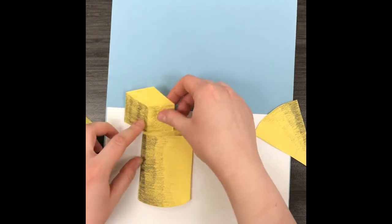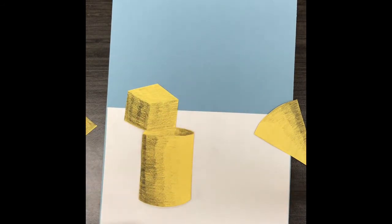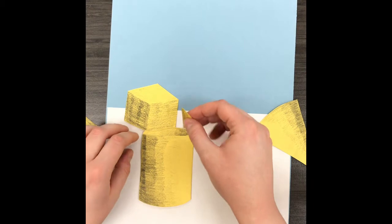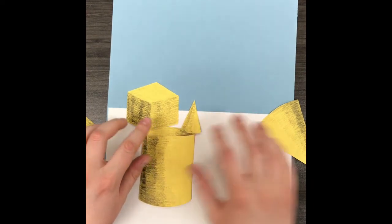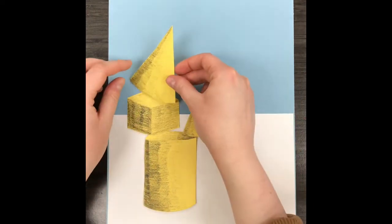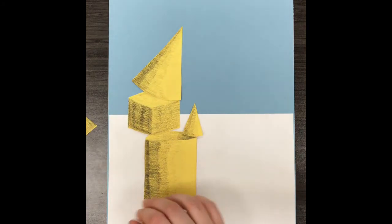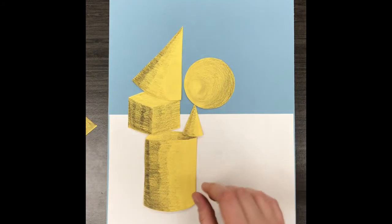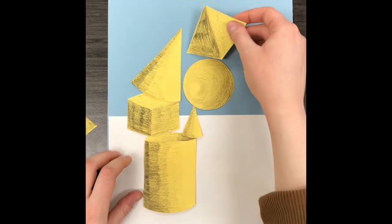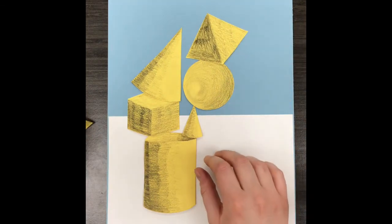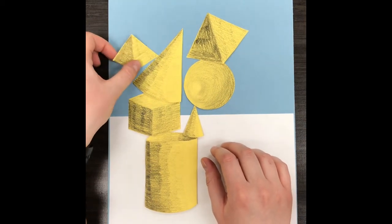So right now I'm going to do my cylinder at the bottom. Maybe I want my cube to be kind of hanging off the side. And then my cones and then maybe I want the sphere to be balancing on top of one of the cones. So that stack really wouldn't make sense but that's okay because it looks pretty cool.